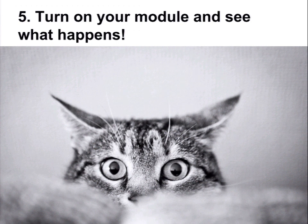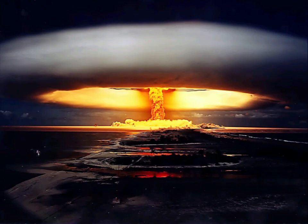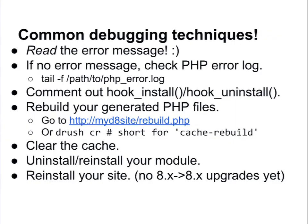The fifth step is you turn on your module and you see what happens. Most of the time what happens is errors, because we've renamed functions, we've completely removed things, all kinds of stuff. Here are a few debugging techniques: one is actually read the error message — many times that will give your best clue. If you're not getting an error message, you can look in the PHP error log — that would be a white screen of death situation. One of the best tips is to comment out your hook_install and hook_uninstall, because oftentimes if they're calling out to the field API to create a field, they might just totally break.